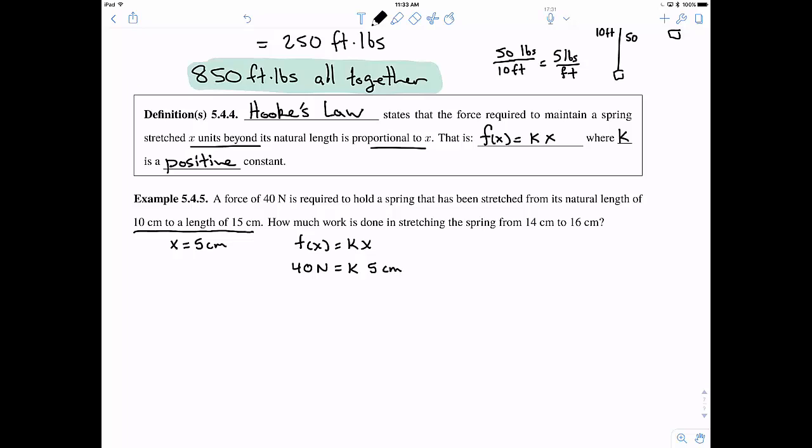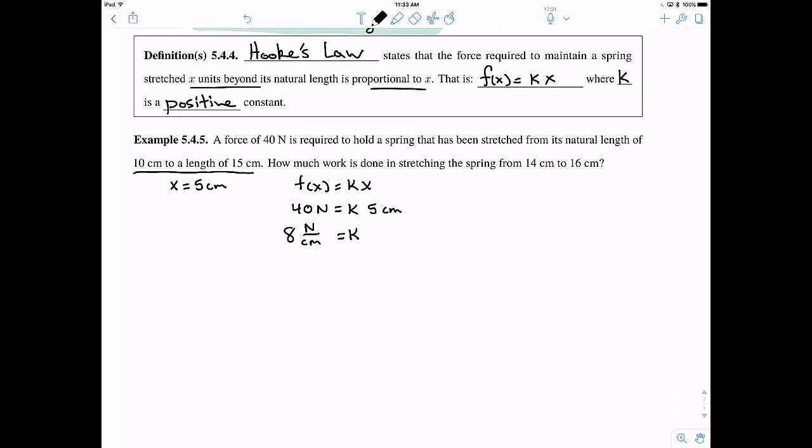Well, here we go. We have our force is k times x. So our force 40 newtons is some k times x. And that distance is 5 centimeters. So the units will become important here, you'll see. So all together k is 8 newtons per centimeter.